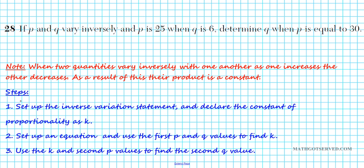Now, these are the steps we're going to use to solve this problem. First of all, we're going to set up an inverse variation statement to help you see what it means when two quantities have an inverse relationship. And then we're going to declare our constant of proportionality. We're going to call it K. You can call it any variable you want. Now, with K, we're going to set up an equation.